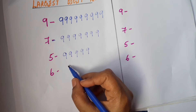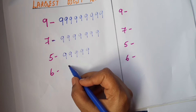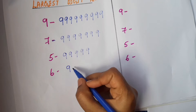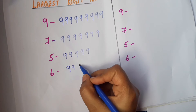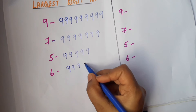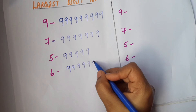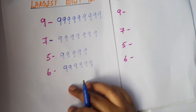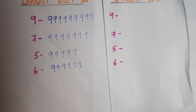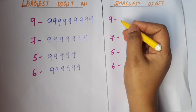Now, the greatest or largest six-digit number means six times nine: one, two, three, four, five, six. So the largest six-digit number is 9,99,999.